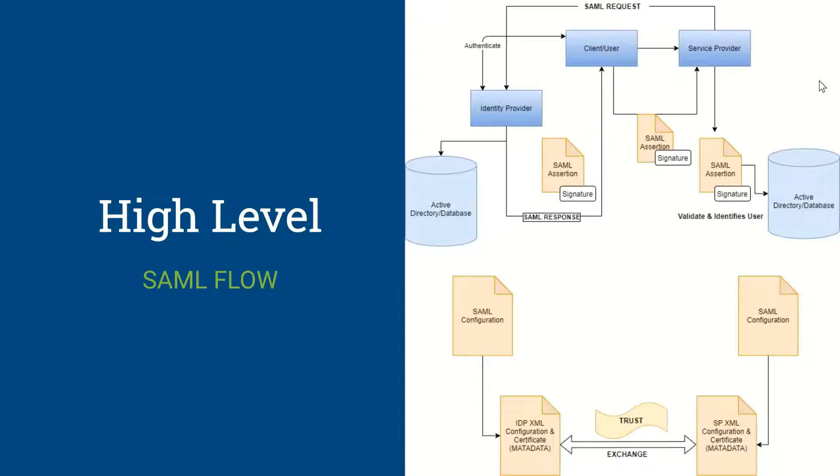On the right-hand side, we have a flow diagram and I'll start from the top. Suppose you as a client want to access a service provider. I'm taking the service provider as Salesforce and the identity provider as Google. So as a user, you want to access Salesforce.